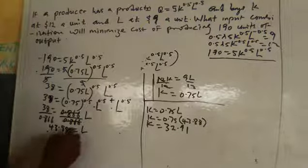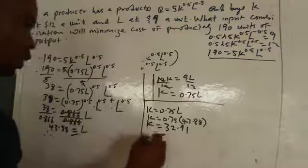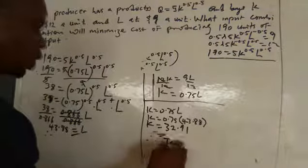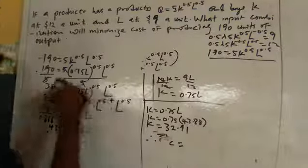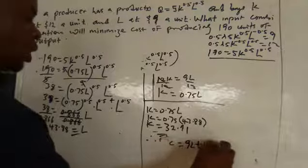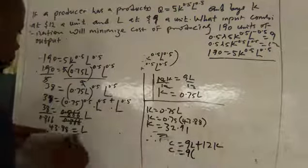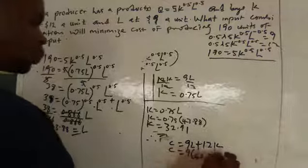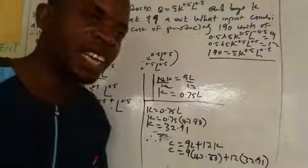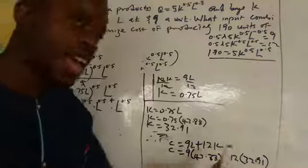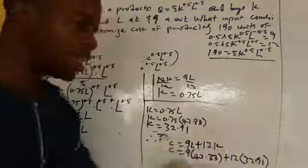Sometimes the examiner may also ask you to find the total cost. If so, substitute the values of L and K into the cost function. Total cost = 9L + 12K = 9(43.88) + 12(32.91). Whatever value you compute is your total cost and final answer. After getting your L and K, plug them into the cost equation to get the final answer. Please subscribe and watch more of our videos.